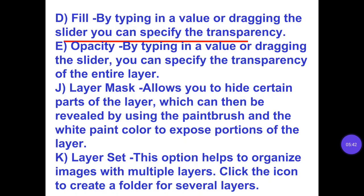D. By typing in a value or dragging the slider you can specify the transparency. E. Opacity: by typing in a value or dragging the slider you can specify the transparency of the entire layer. J. Layer mask allows you to hide certain parts of the layer, which can be revealed by using the paintbrush and white paint color to expose portions of the layer. K. Layer set: this option helps to organize images with multiple layers. Click the icon to create a folder for similar layers.